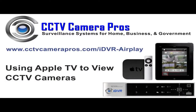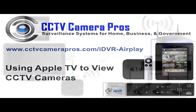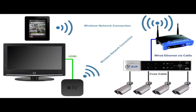This video will demonstrate how to use the mobile CMS iPad app for the iDVR and AirPlay on Apple TV to view CCTV cameras live on an LCD television. This diagram illustrates the network and cabling used for this surveillance system. On the right, our security cameras are hardwired via coax cable to the surveillance DVR. The DVR is connected to our network router using CAT5 cable.